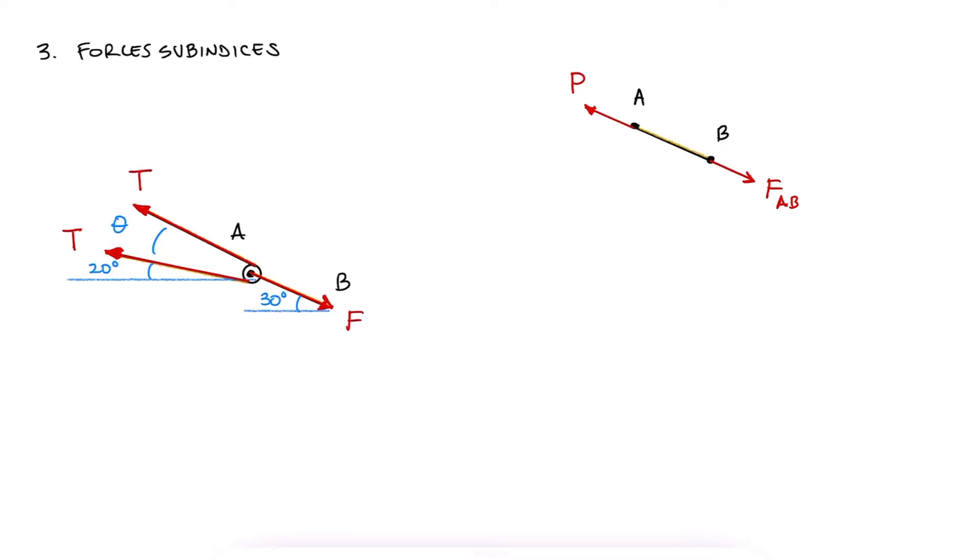The reaction force that the pulley causes on A, in the direction from B to A, will have the subscripts BA. Notice that this is consistent with the forces on the free body diagram and that FAB is a reaction to FBA, equal in magnitude and opposite in direction.